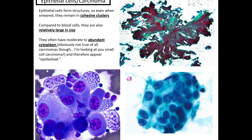Epithelial cells or carcinomas form structures, so even when smeared they often remain in cohesive clusters. Compared to blood cells, epithelial cells are relatively large in size and often have moderate to abundant cytoplasm — though not true of all carcinomas. And he makes a joke: 'I'm looking at you, small cell carcinoma,' which can behave as it wants and often has that nuclear molding.